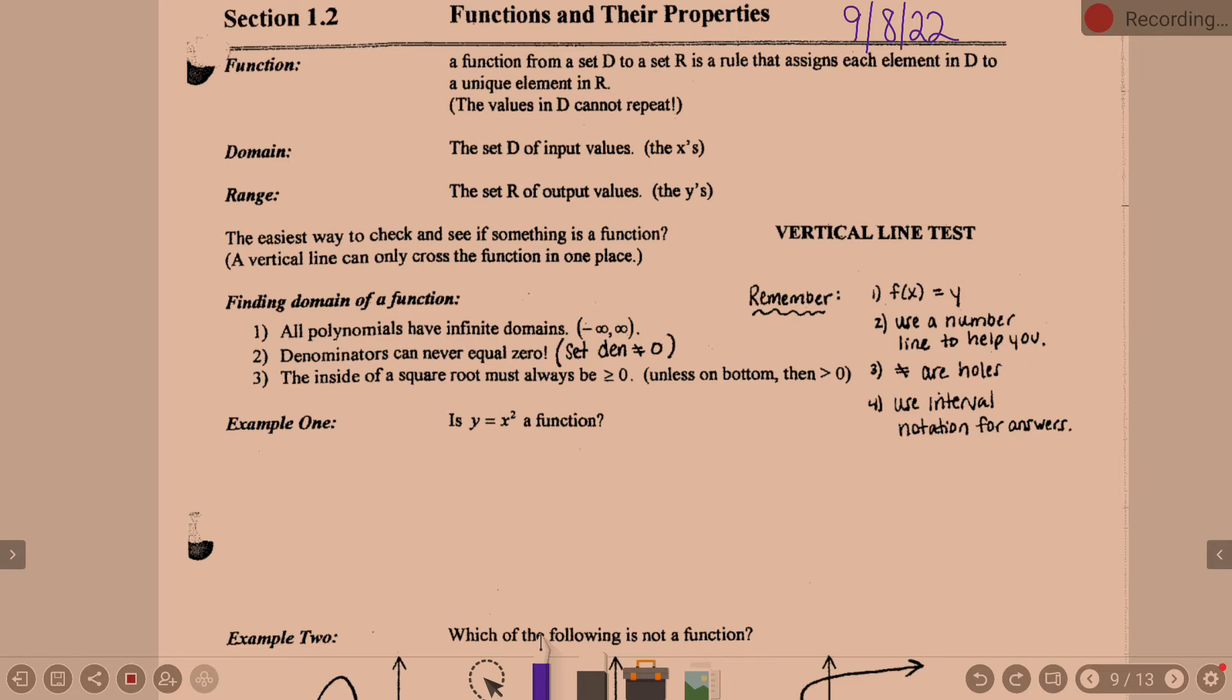So domain, the abbreviation is D here, but it's a set D of input values. Or, in other words, it is the X's. If domain is the input or the X's, then range is the output or the Y's. So alphabetical is my shortcut. If domain and range you think alphabetically, X, Y is alphabetically, right? D comes before R, X comes before Y.